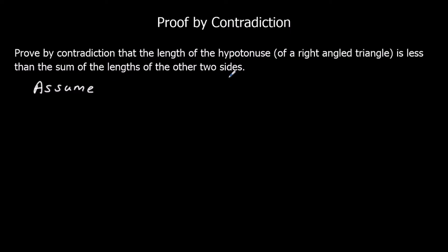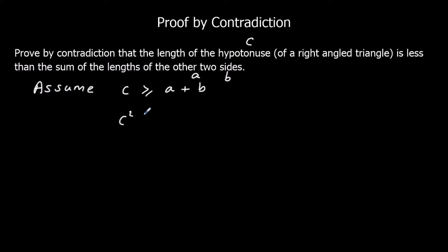So what's the opposite? If we call the hypotenuse C and the other two lengths A and B, like we do in Pythagoras, we assume that C is bigger than or equal to A plus B. Then we're going to find a problem with this assumption. So if we square both sides, we get C squared is bigger than or equal to (A plus B) squared.